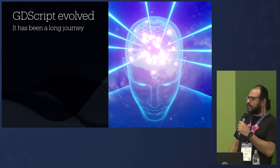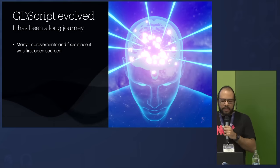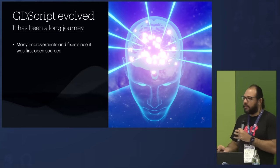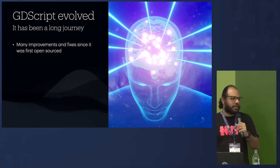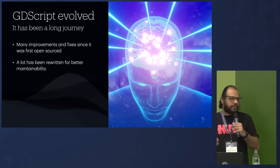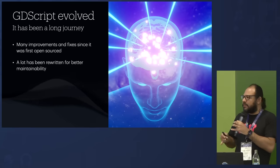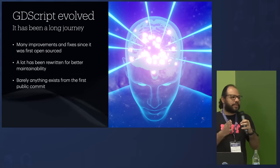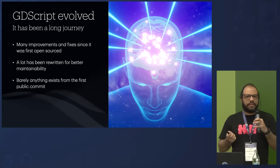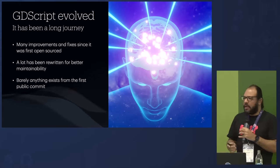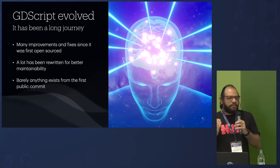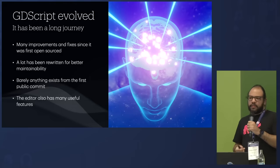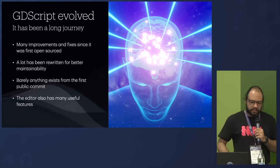GDScript is not the same language — it has evolved over time with a lot of improvements and bug fixes since it was open-sourced, and it's much more reliable now. A lot has been rewritten, making it better and more maintainable. A lot of things from the first open source commit are gone and replaced with something better. What remains mostly is the API bits, because the scripting API in Godot hasn't changed that much since the beginning.